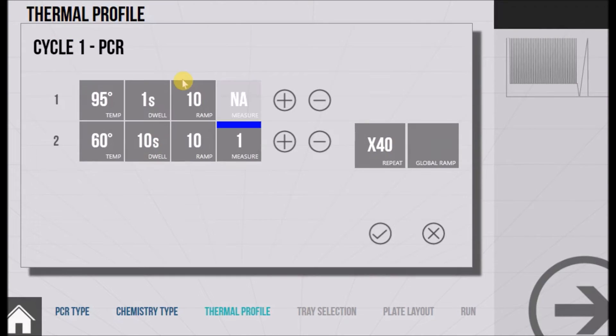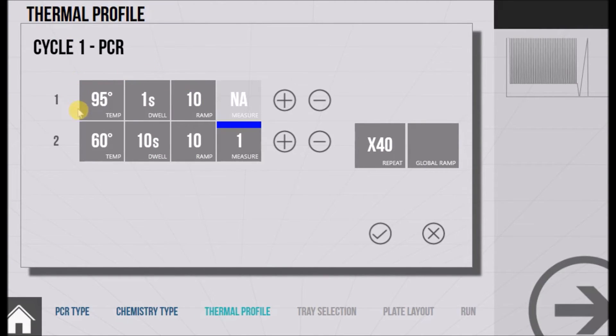If we enter our PCR section we can see our two steps. One at 95 degrees Celsius for one second using a ramp rate of 10 degrees Celsius per second, and the other at 60 degrees Celsius for 10 seconds using a ramp rate of 10 degrees Celsius per second and measuring in optical channel one. This is repeated 40 times.